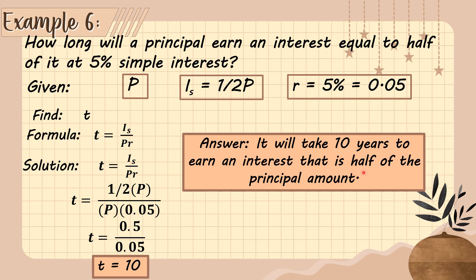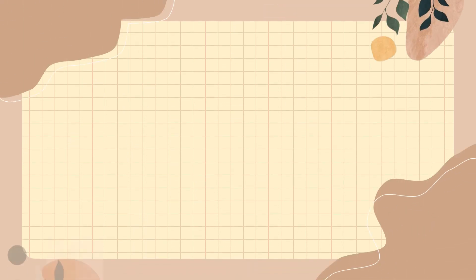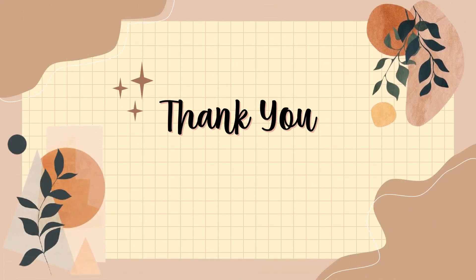For example, if you invest 1,000,000 pesos at a 5 percent interest rate offered by the bank, after 10 years you will have earned 500,000 pesos in interest. That's all for today everyone — I hope you learned something. Thank you so much for watching, and you may now enjoy your quiz.